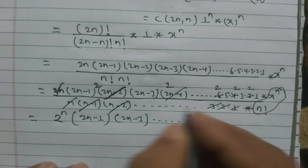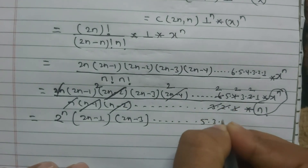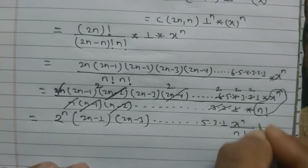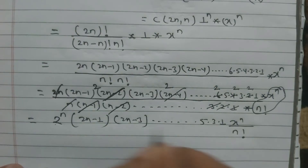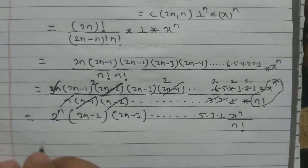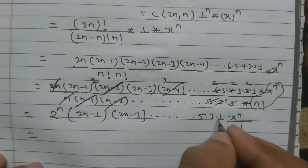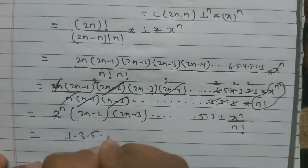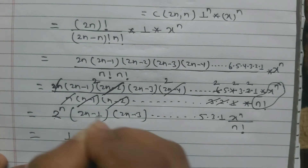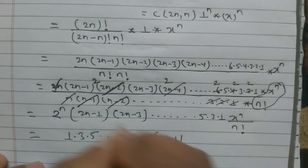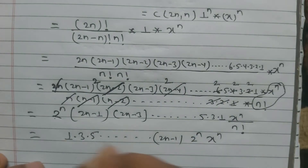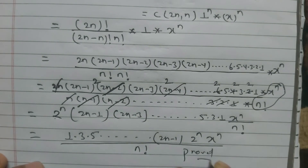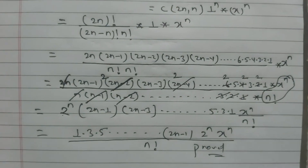After all cancellations, we are left with the odd numbers: 1·3·5·...·(2n−3)·(2n−1), multiplied by 2^n·x^n, divided by n!. This proves the result.